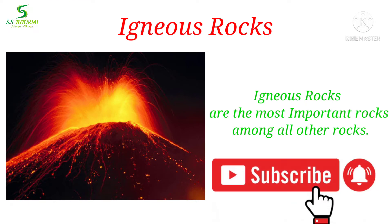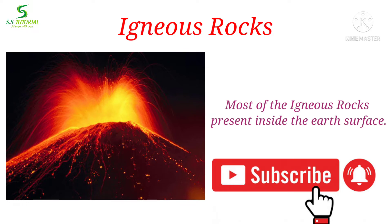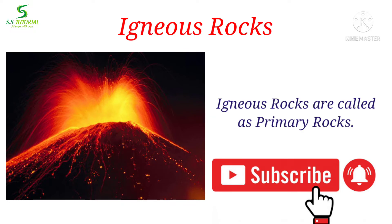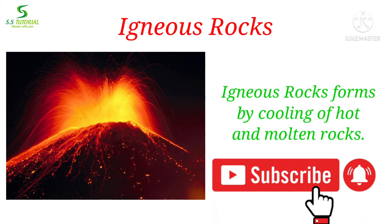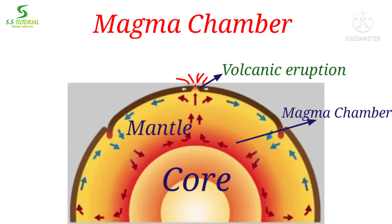Igneous rocks are the most important rocks of all other rocks. Most of the igneous rocks are located inside of the earth's surface. They are called as primary rocks as they originate first of all rocks. The word igneous is related with the Latin word fire, which means igneous rocks form by cooling of hot and molten rocks. There is a zone beneath the earth's crust that extends almost 50 km to 250 km, where the materials are in molten state, called as the magma chamber.